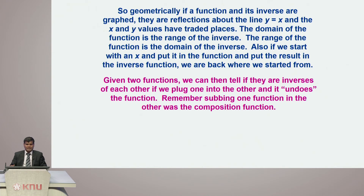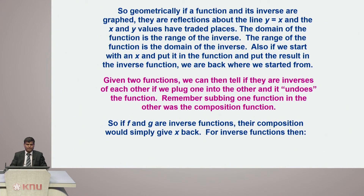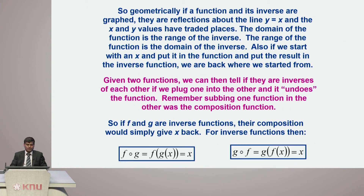If we start with an x, put it in the function, and then put the result into the inverse function, we are back where we started. Given two functions, we can tell if they are inverses by composing them — if f and g are inverses, their composition gives back x. That is: f ∘ g = f(g(x)) = x, and g ∘ f = g(f(x)) = x. Only if their composition yields x are they inverse functions.